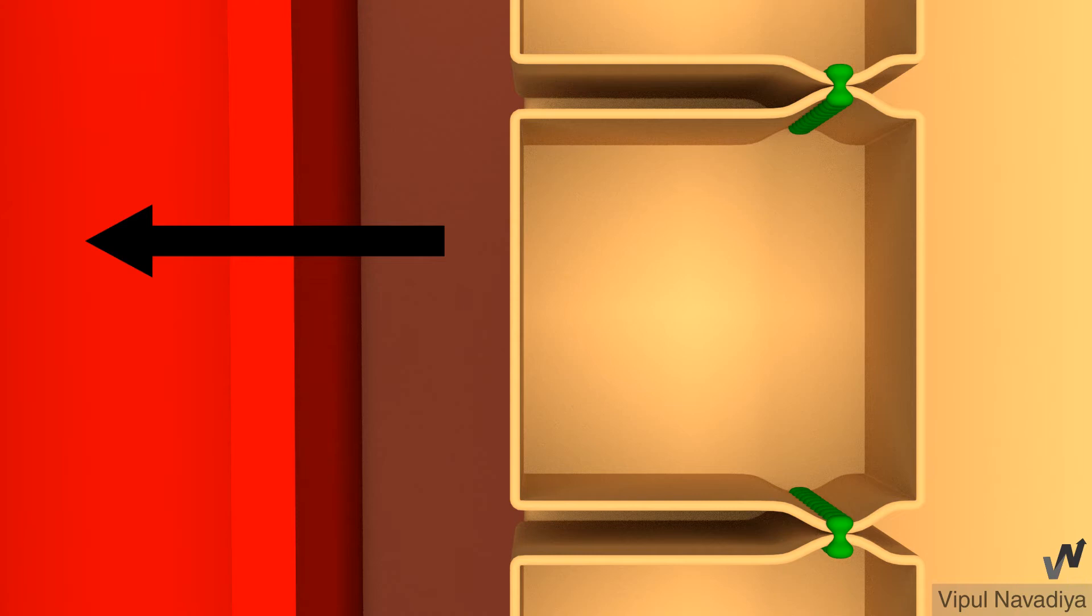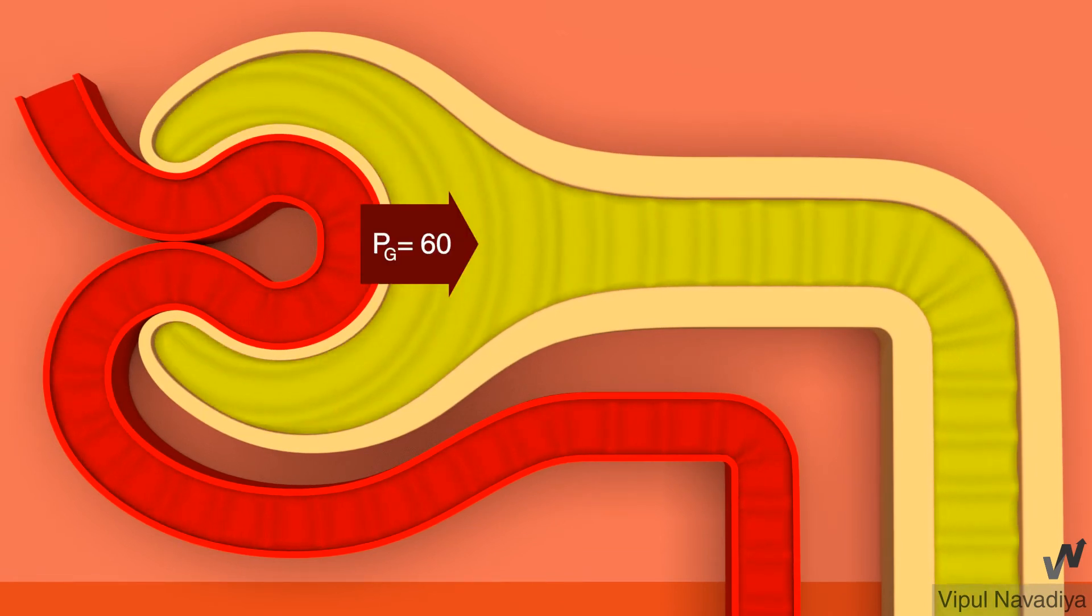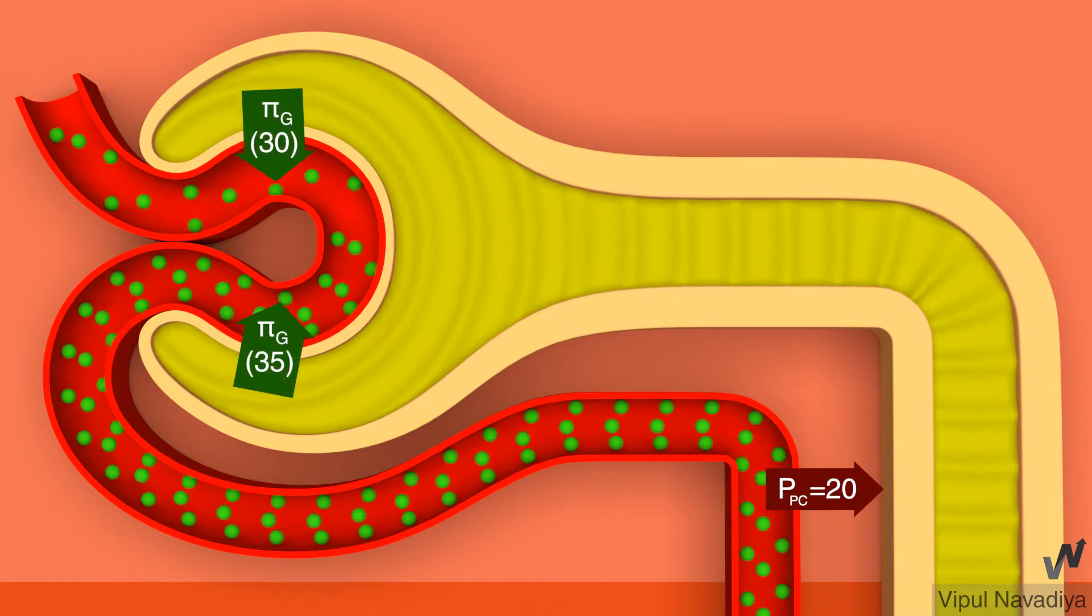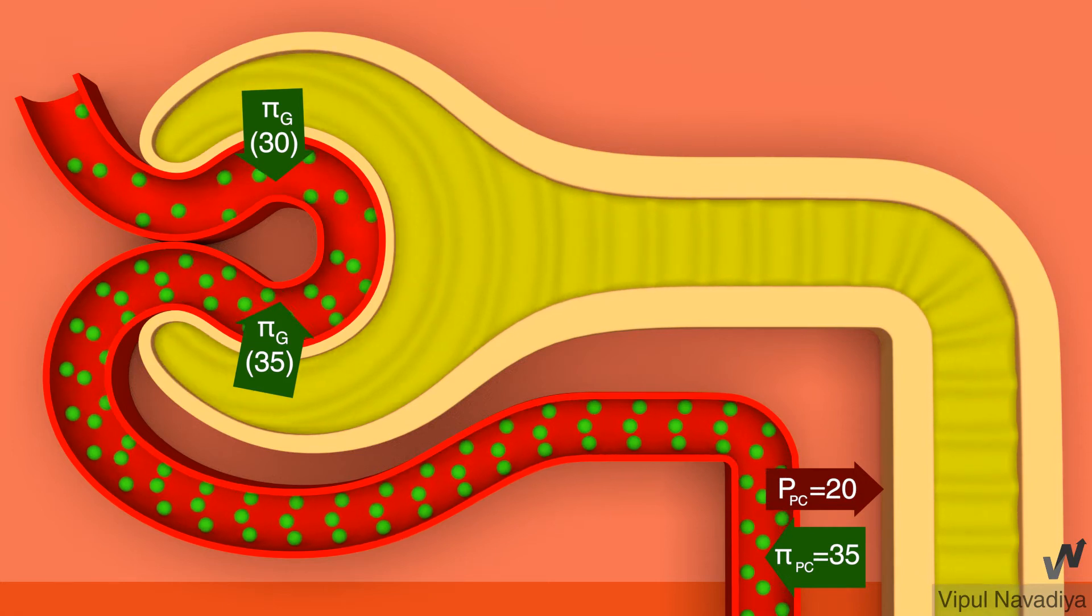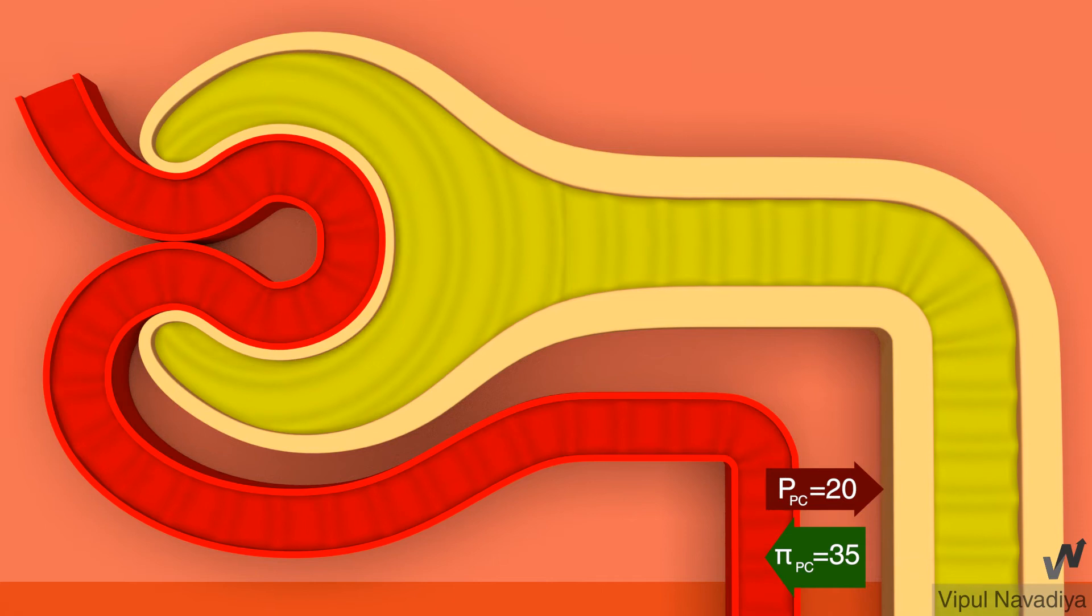Extent of this drainage by peritubular capillary is determined by Starling forces. We know that hydrostatic pressure in glomerular capillary is 60 mmHg. Because of efferent arteriolar resistance, hydrostatic pressure in peritubular capillaries drops to 20 mmHg. This pressure opposes fluid uptake. Colloid osmotic pressure rises from 30 to 35 mmHg by end of the glomerular capillary. So colloid osmotic pressure in peritubular capillary is 35 mmHg which promotes fluid uptake. The interstitial hydrostatic pressure is about 10 mmHg which promotes fluid uptake. The interstitial osmotic pressure is 5 mmHg which opposes fluid uptake. Thus, net driving force is about 20 mmHg in favor of reabsorption. So fluid is drained by peritubular capillary by this force.